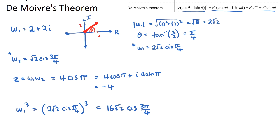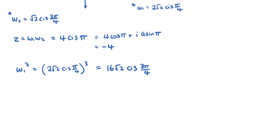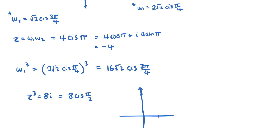De Moivre's theorem is most popular in questions where you find the roots of a complex number. A typical question might say: if z³ = 8i, find z. We can convert 8i into modulus-argument form. Since 8i has no real component, it is 8 units directly up on the Argand diagram — directly up corresponds to an argument of π/2 — so 8i = 8 cis(π/2).